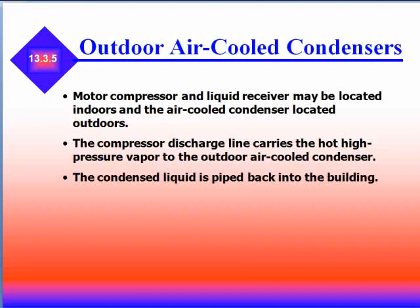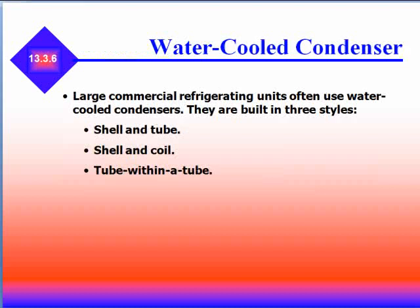Motor compressors and liquid receivers can be located inside, with the air-cooled condenser located outside. The compressor discharge line carries the hot, high-pressure vapor to the outdoor air-cooled condenser, and the condensed liquid is piped back into the building. Large commercial units can also use water-cooled condensers, which are built in three styles: shell and tube, shell and coil, and tube within tube.